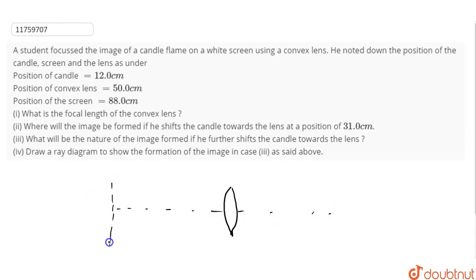So, let's think about these points. The position of candle is 12 cm. So if we have the candle position, this distance is 12 cm. Position of convex lens is 50 cm. Position of screen, where image is obtained, is 88 cm.